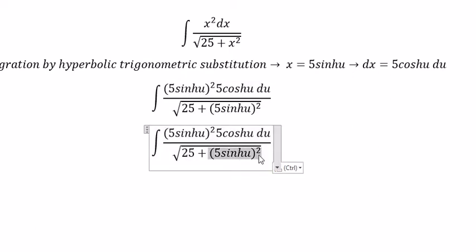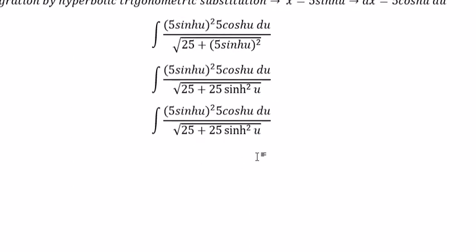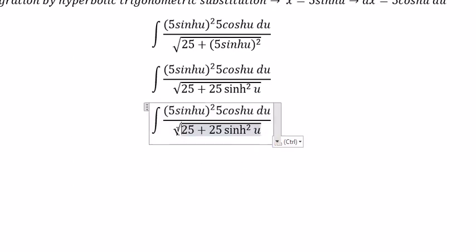This one we got 25 sinh u square. The square root of 25 we got 5, and we put 5 outside.